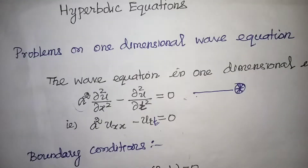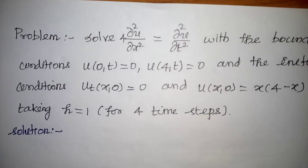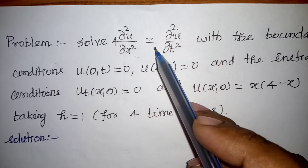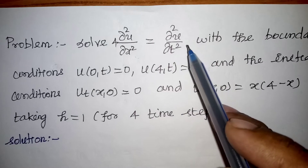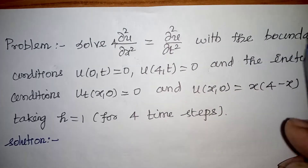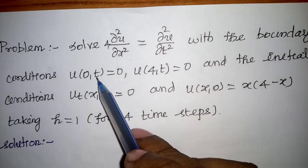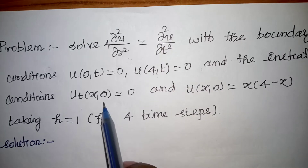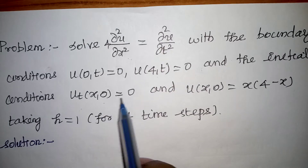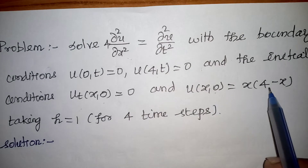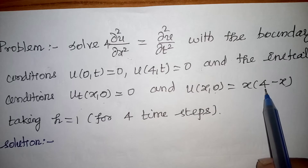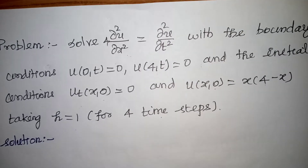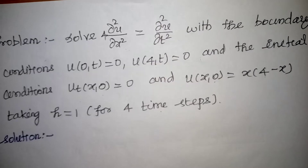Problem 1: Solve 4·(∂²u/∂x²) = ∂²u/∂t² with boundary conditions u(0,t) = 0 and u(4,t) = 0, and initial conditions u_t(x,0) = 0 and u(x,0) = x(4−x), taking h = 1 for 4 time steps.